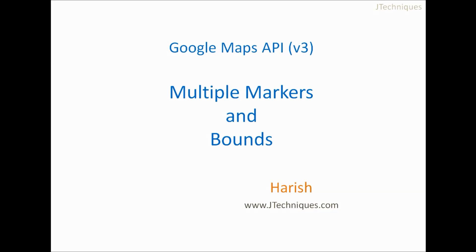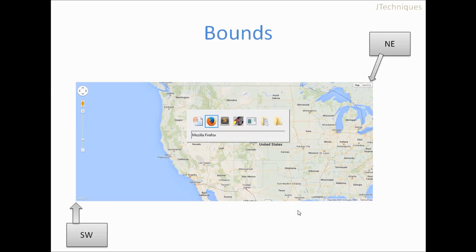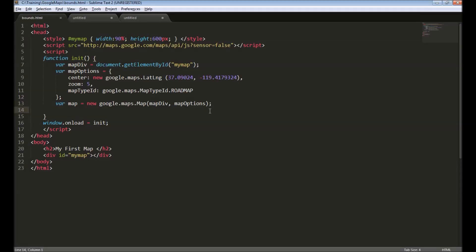Hi, welcome back, this is Arish from jtechnews.com. This is a video series on Google Maps API. In this video we will have a look at bounds — we will create multiple markers and use bounds to make sure all the markers are within the visible area of the map. When we look at a map we can get details about the current coordinates visible, including the north-east corner and the south-west corner coordinate.